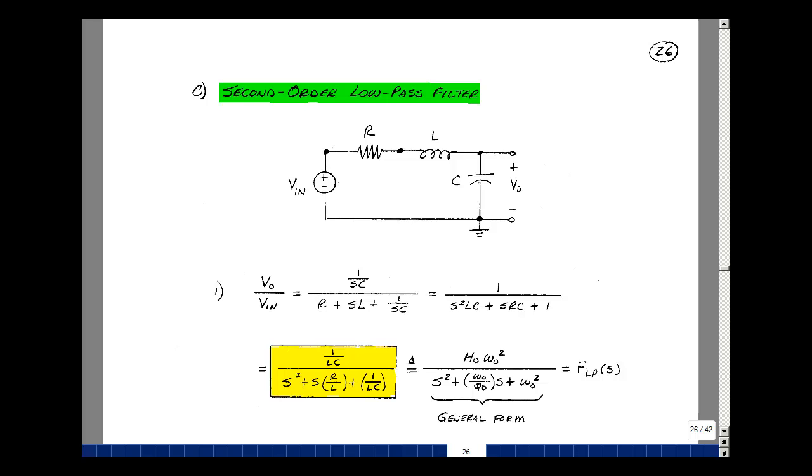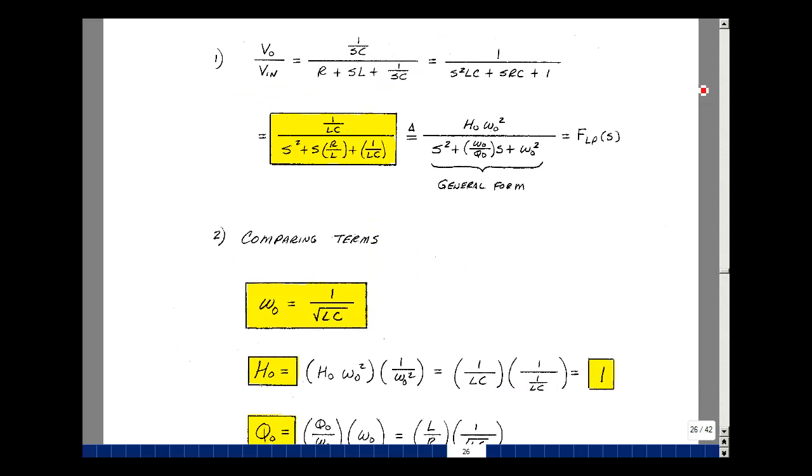I'd like to solve for the value of those three constants, omega naught, H naught, and Q naught, in terms of the R, L, and C of my circuit. This term here has omega naught squared, and that would correspond to 1 over LC. So we could then quickly solve for omega naught is 1 over the square root of LC.